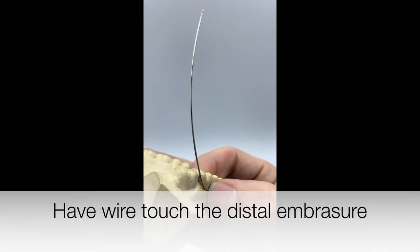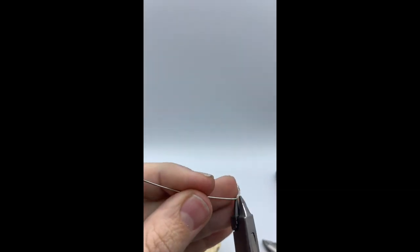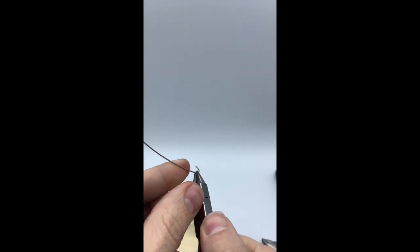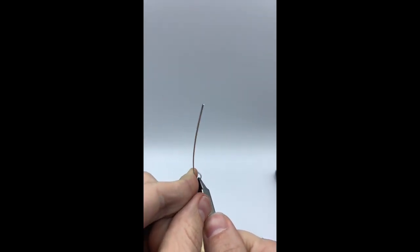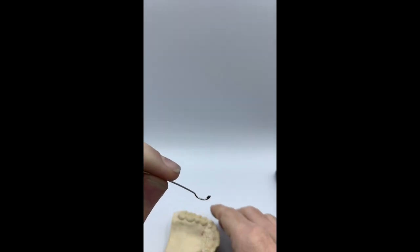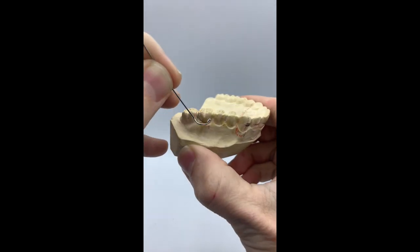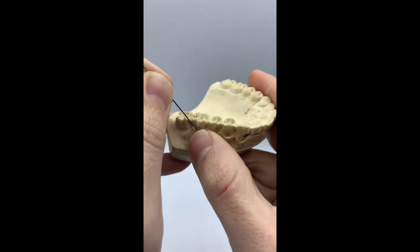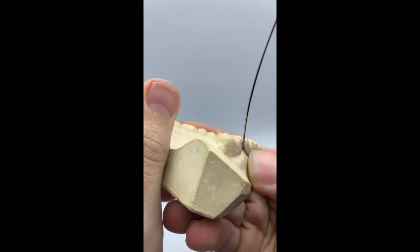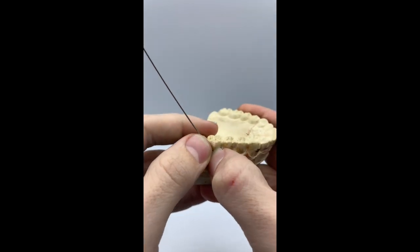Once the wire is contacting the buccal surface, we want to get the wire tucked into that distal embrasure. To do this, mark where your wire needs to be bent, hold the wire straight, and bend the longer end towards the outside. As you see, the wire is now inside that distal embrasure.